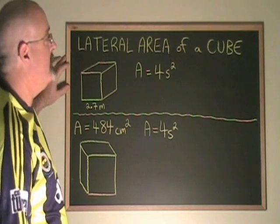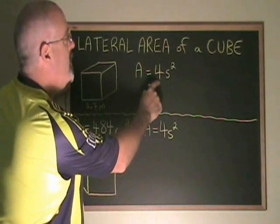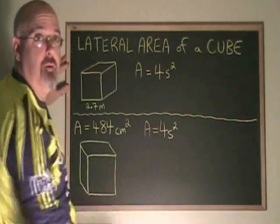The lateral area of a cube is found using this formula. The area is equal to 4 times the length of the side squared.